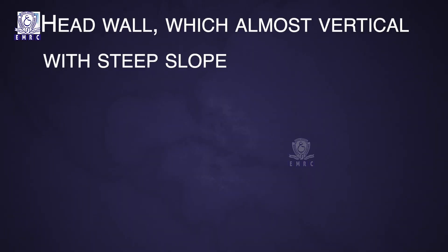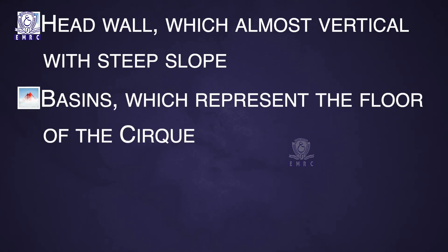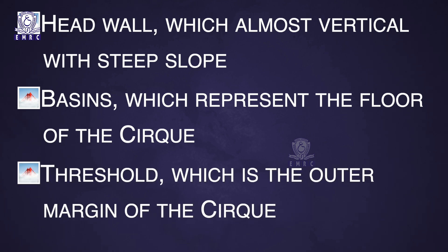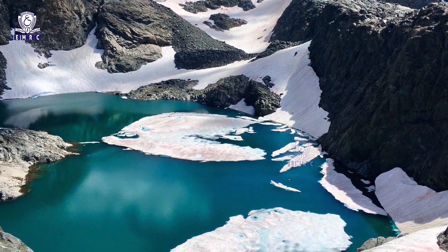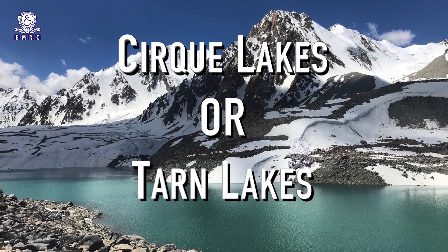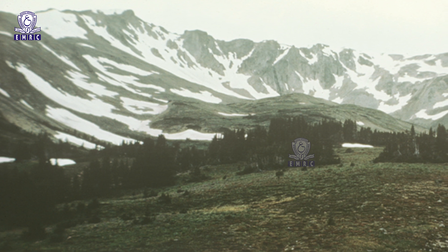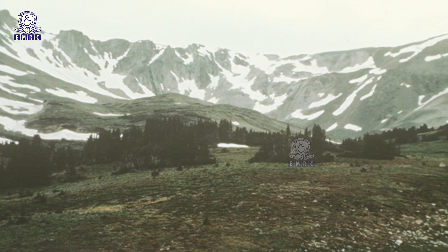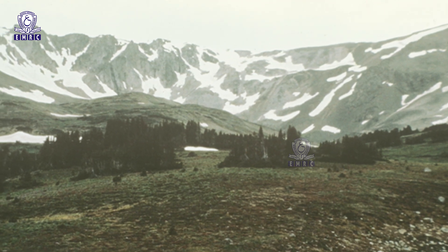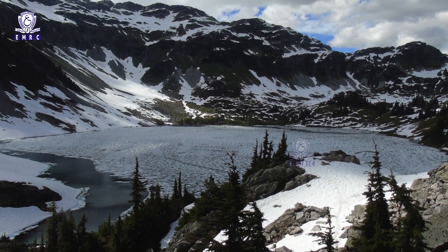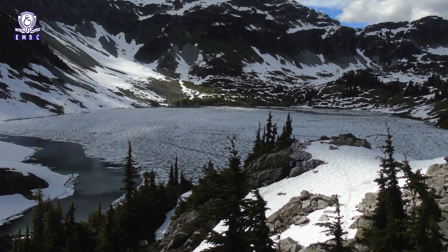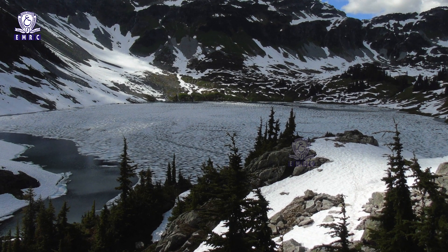There are three components of an open cirque: the headwall, which is almost vertical with steep slope; the basin, which represents the floor of the cirque; and the threshold, which is the outer margin of the cirque. The gap that develops between the glacier and the headwall of the cirque is called a bergschrund. Lakes are generally found at the base of cirques. Such lakes are called cirque lakes or tarn lakes. After deglaciation, the rock basin is filled with water forming small glacial lakes called cirque lakes or tarn lakes.